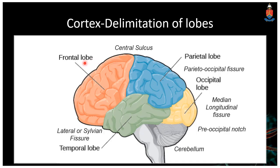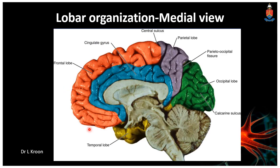The cerebral cortex is comprised of gyri and sulci, and the larger sulci divide these gyri into subsequent lobes, as we can see here. This is exactly the same picture as the previous one, except that it's a medial view of the lobar organization of the brain, with some color coding of the different types of lobes.